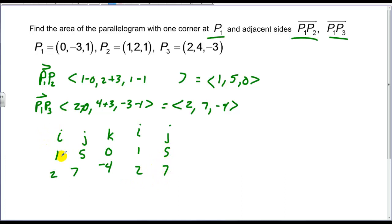Go through the same routine. Negative 20, i, plus 0, j, plus 7, k. Those are all the products in the positive direction. Negative direction. That positive 10, which gives me a negative 10, k. There's 0, i. Then there's a negative 4, j, which makes a positive 4, j.